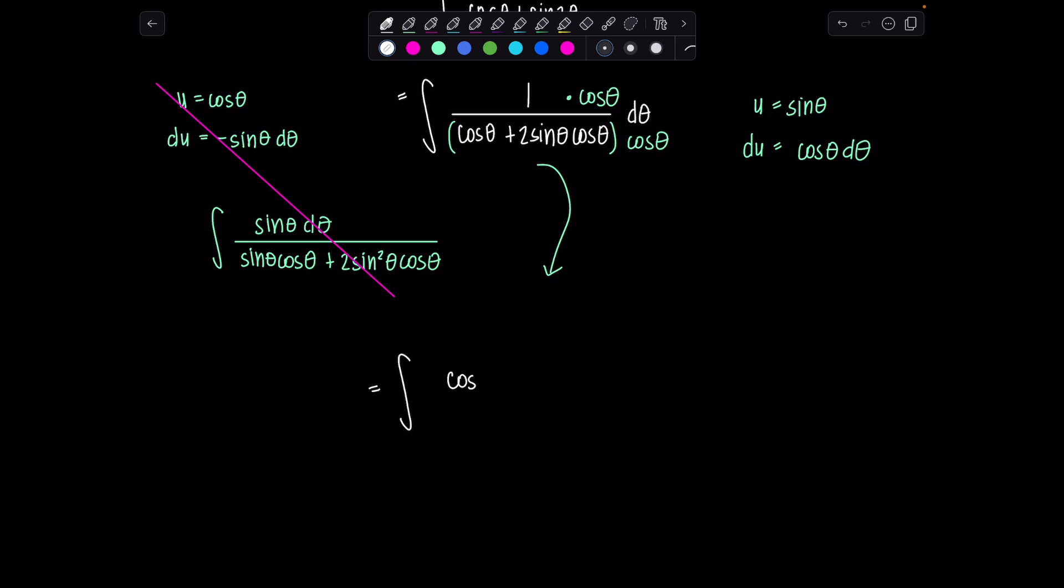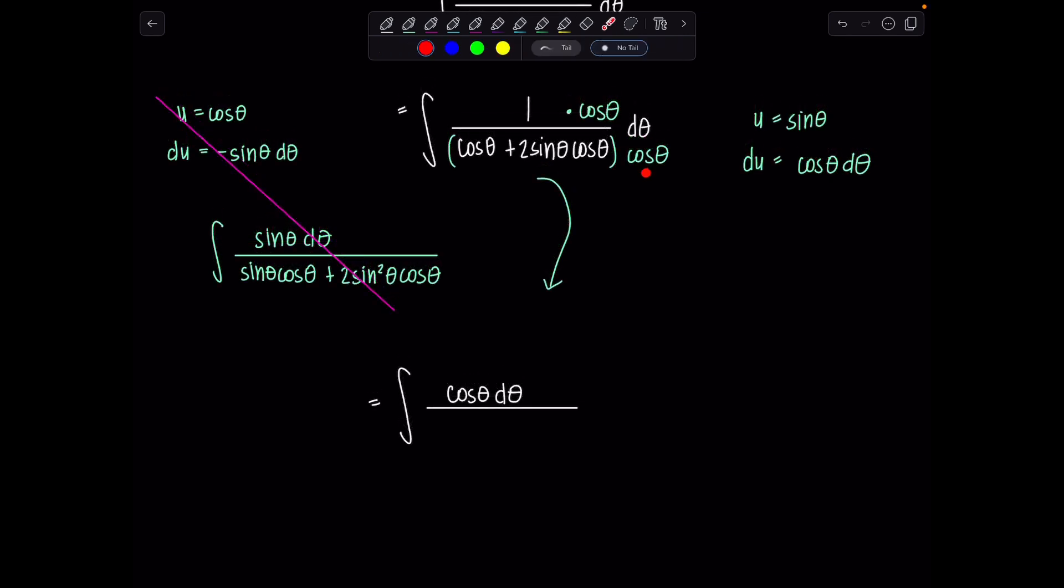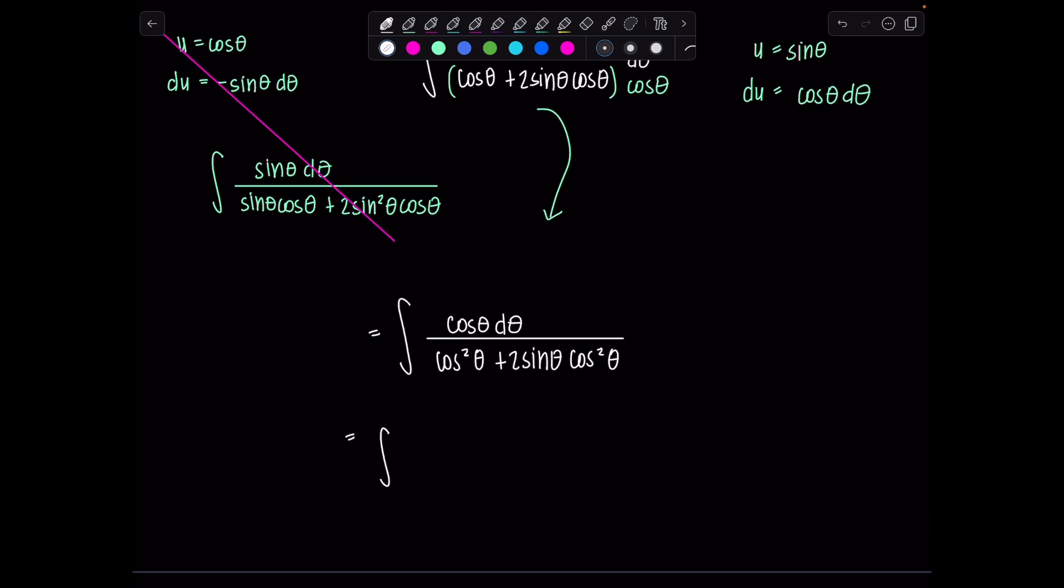So we've got integral cosine theta d theta over, and then we can just distribute this cosine theta on through. So beautiful. And it's going to be cosine squared theta plus 2 sine theta cosine squared theta. Now let me factor out the cosine squared theta that's in the denominator. And then we're almost ready to do our u sub. Don't get carried away and too excited and cancel out cosine theta. Remember, we added an extra one there on purpose. So now it's time to do this u sub.